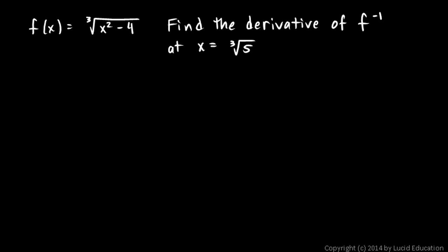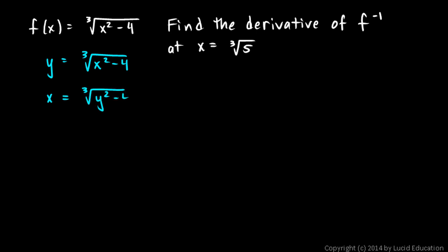Next problem: f of x is the cube root of x squared minus 4. Find the derivative of f inverse at x equals the cube root of 5. We'll do this algebraically also. So rewrite the function as y equals the cube root of x squared minus 4, then switch x and y. So x equals the cube root of y squared minus 4.